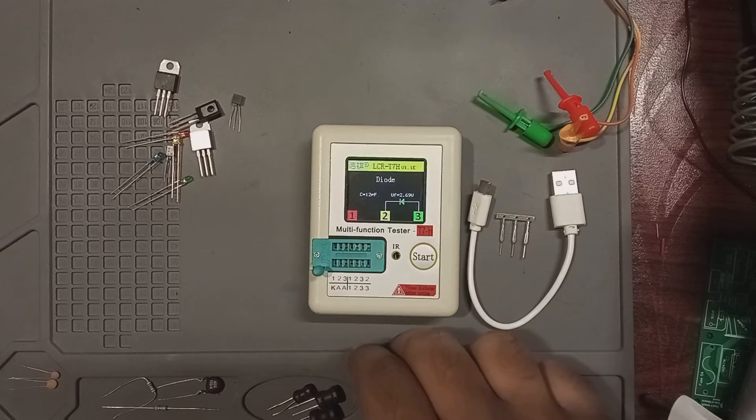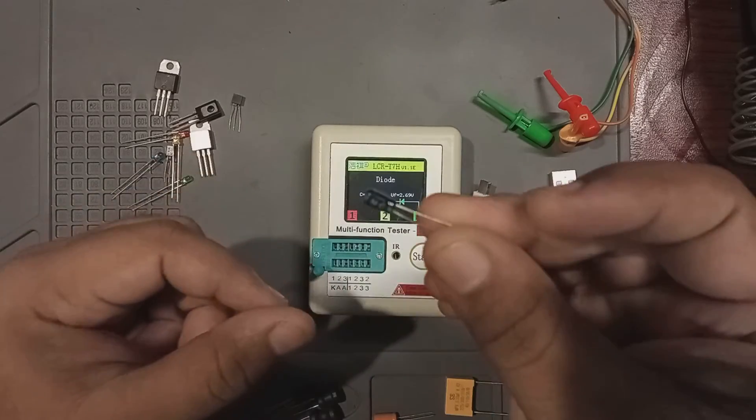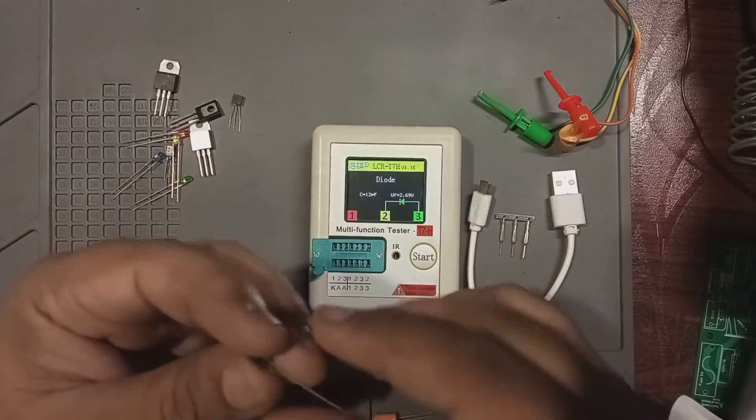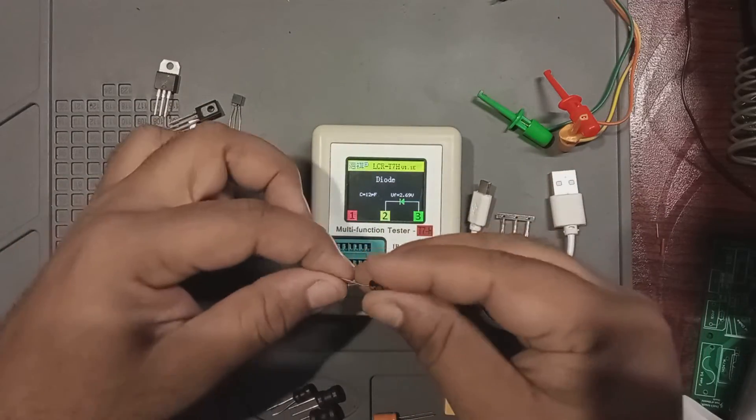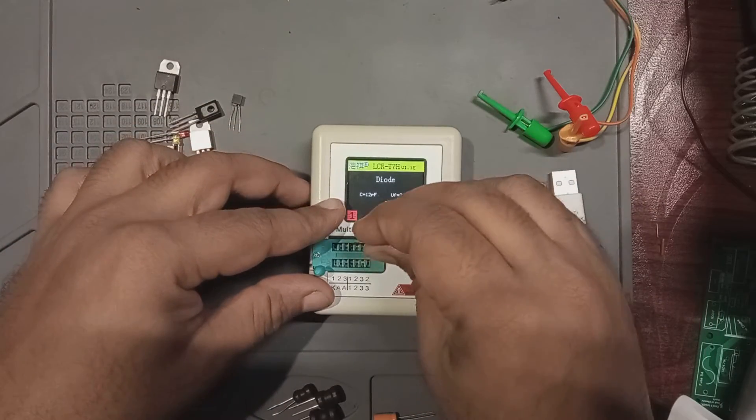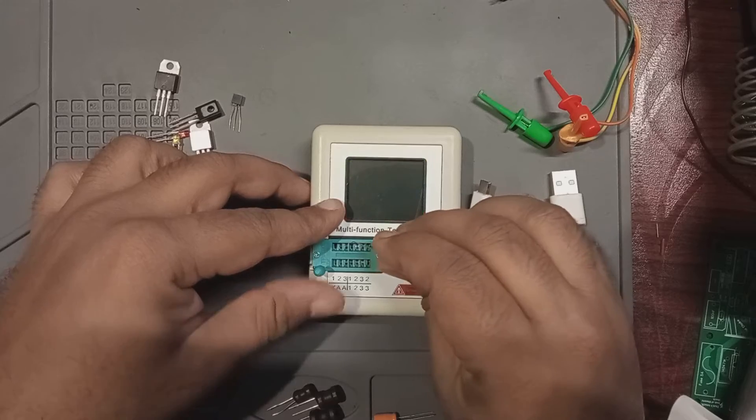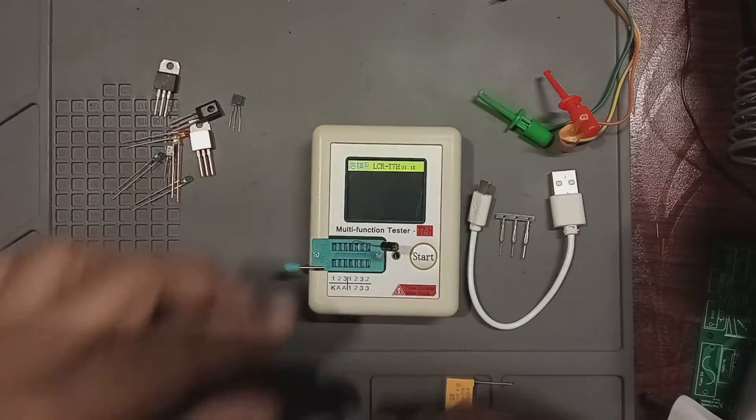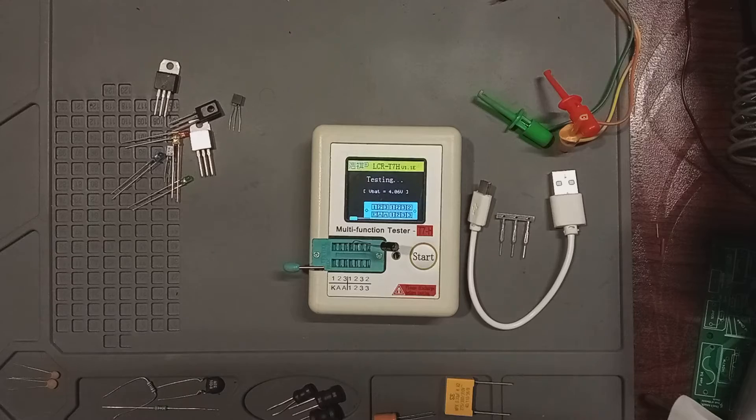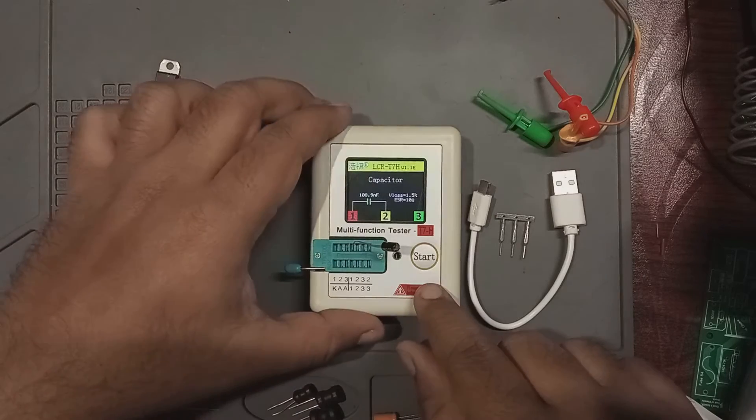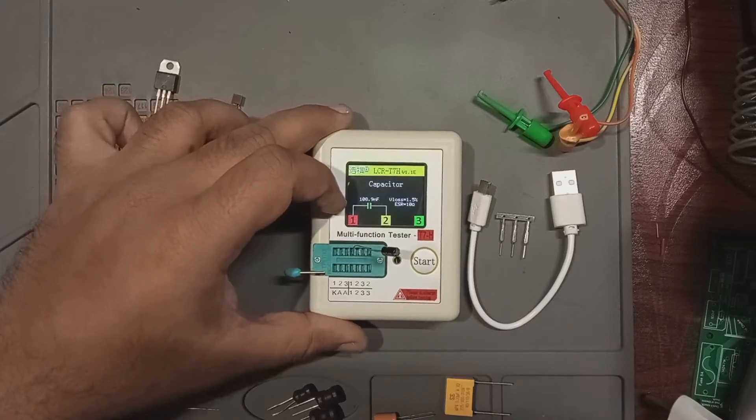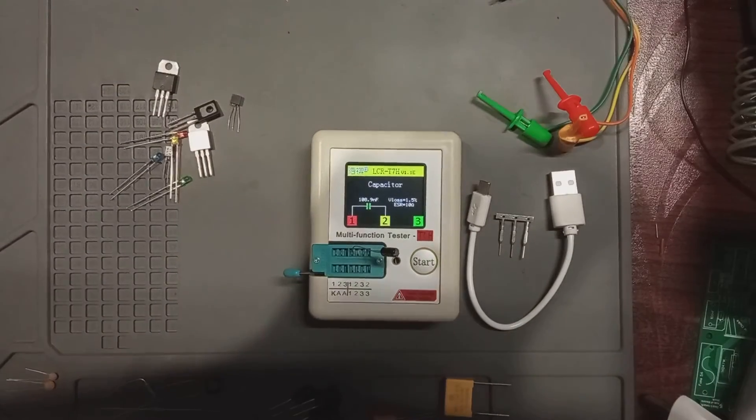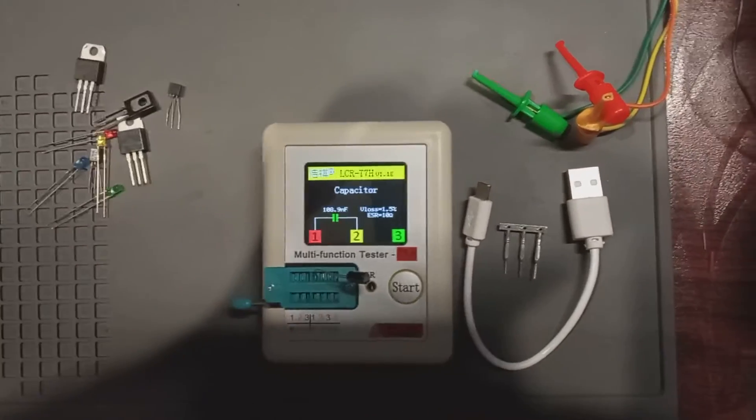And now let's test some capacitors. They gave me this small little capacitor for free with this meter. This is a 0.1 microfarad cap. Let's connect it to this part here. Oh no, I have just bent the pins. But that's okay. So you can see that we have 108.9 nanofarad capacitance here with ESR measured to 10 ohms and a V loss of 1.5%.